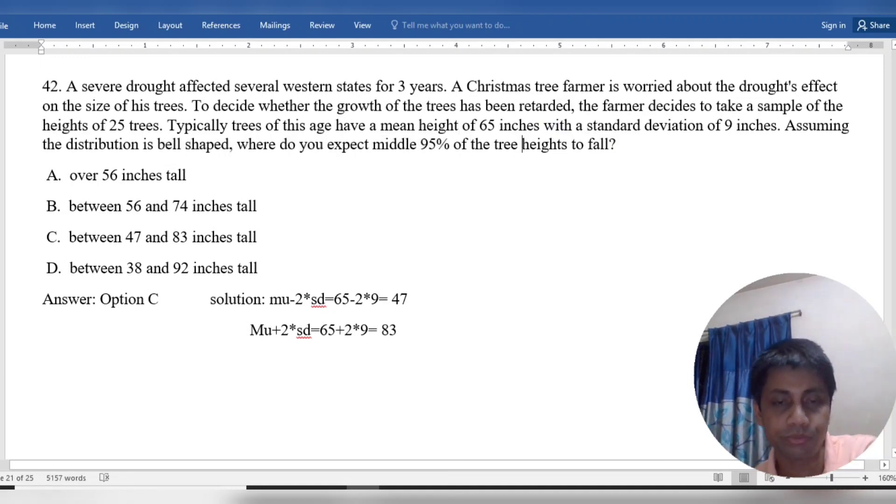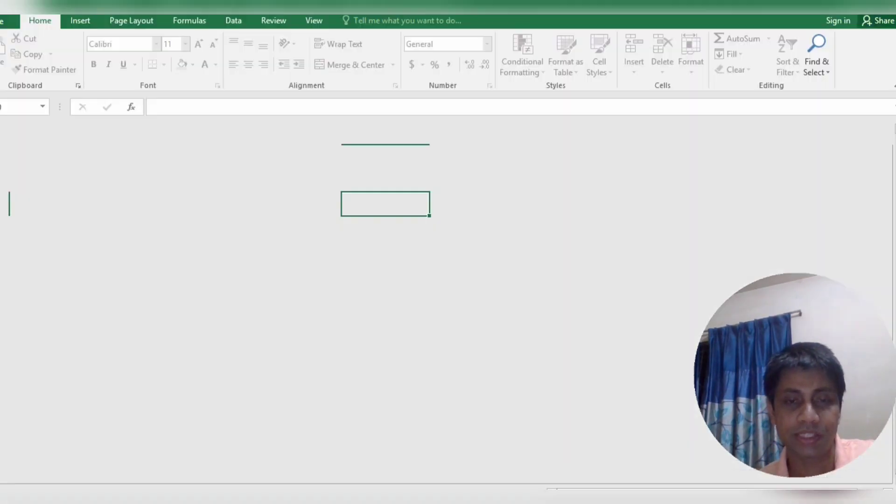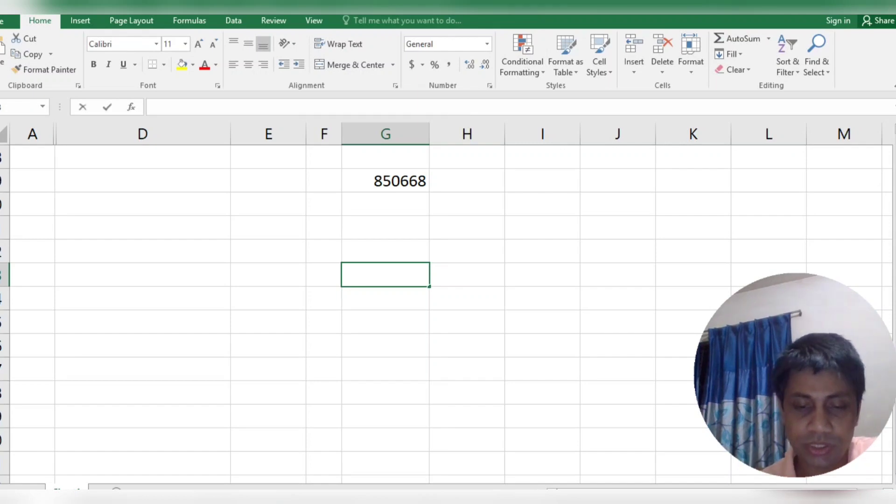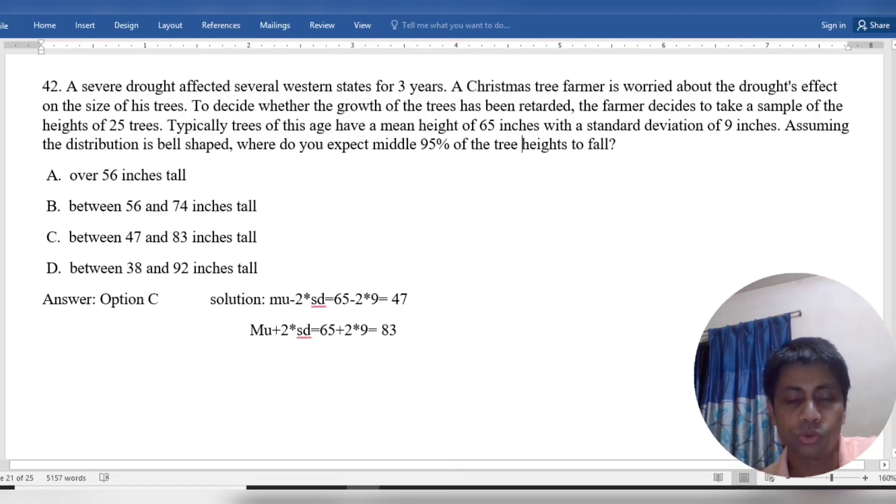We calculate 65 minus 18, which equals 47. We have two standard deviations, so mu minus two standard deviations equals 47.